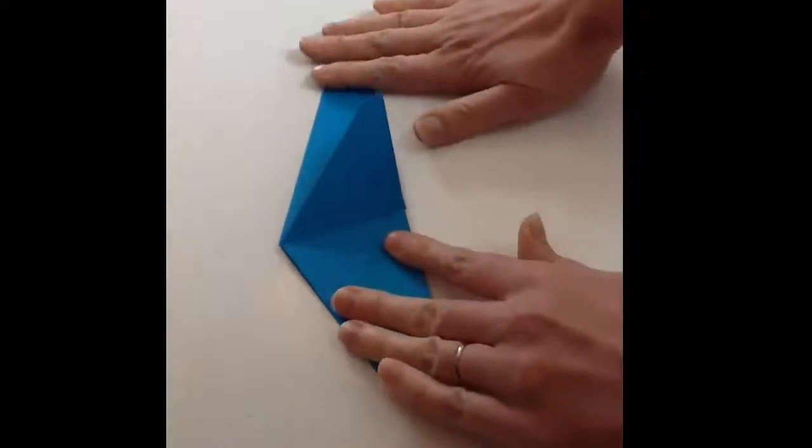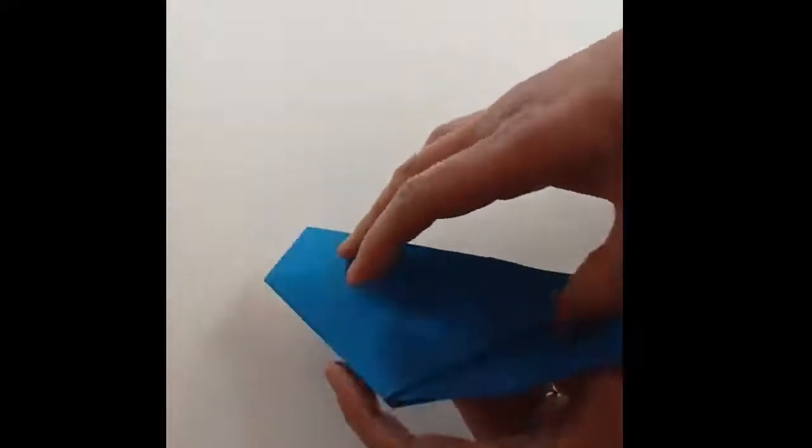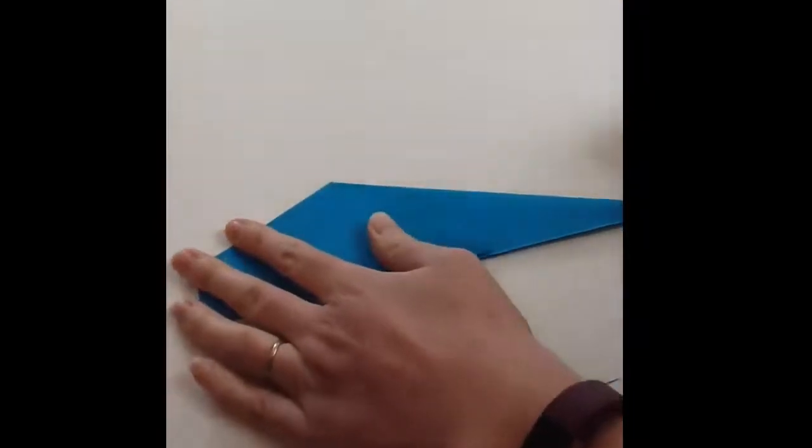Flip it over and fold it to the middle there. And then you fold your whole whale in half. It's starting to take shape now. You can see there's his head, there's his fins on both sides.